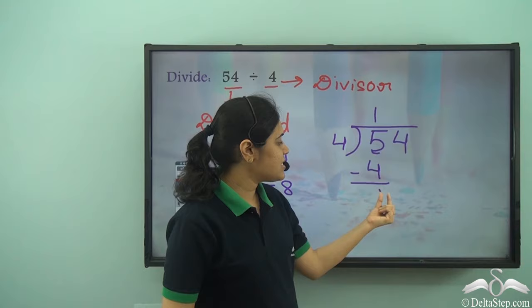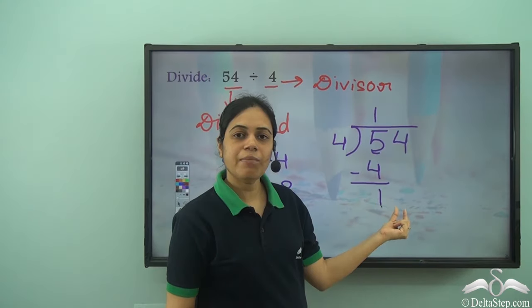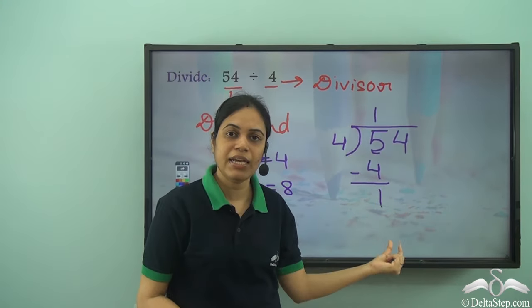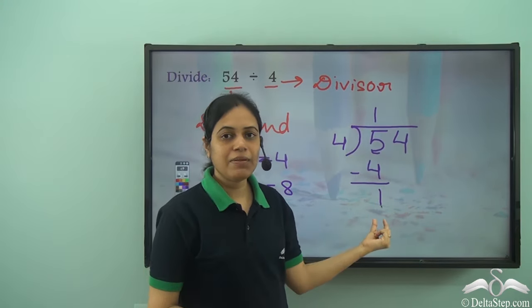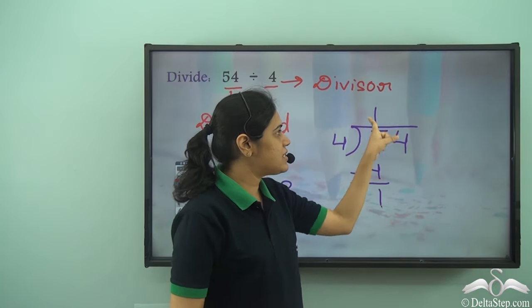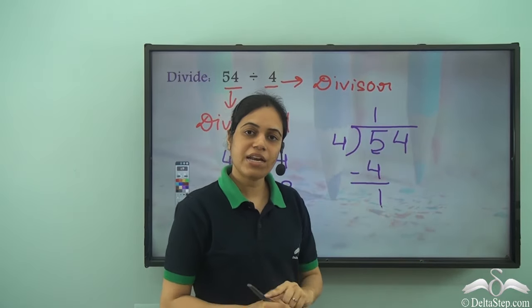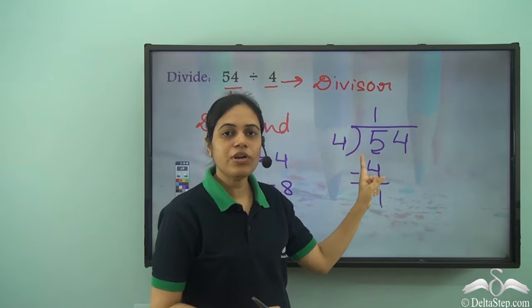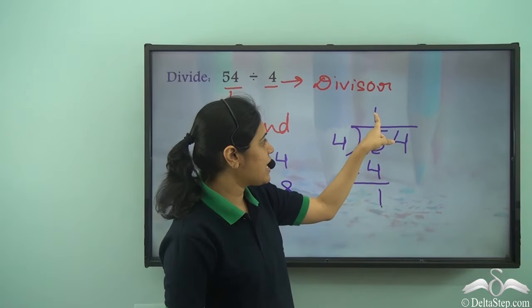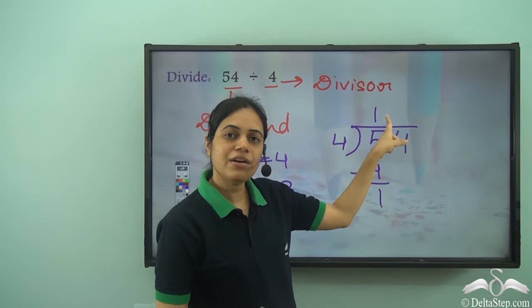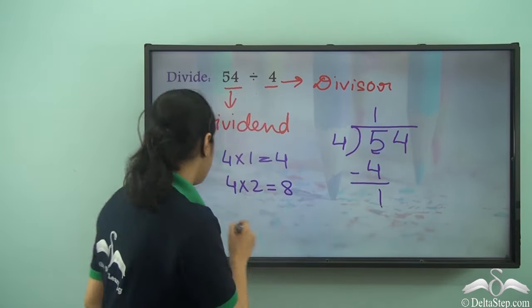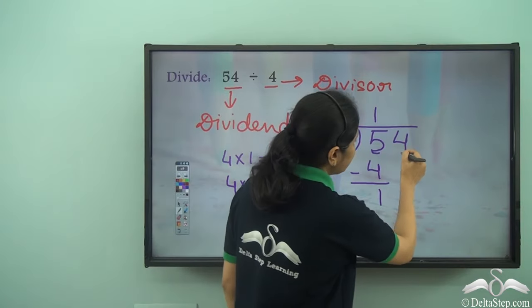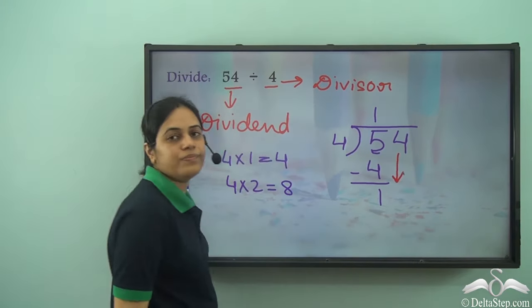I can see that this 1 is less than 4. As long as I am getting a number less than the divisor by subtracting, I can be assured that this is correct. I am getting 1 which is less than 4, so I have taken 1 here which is correct. The next step is that I need to bring this 4 down.